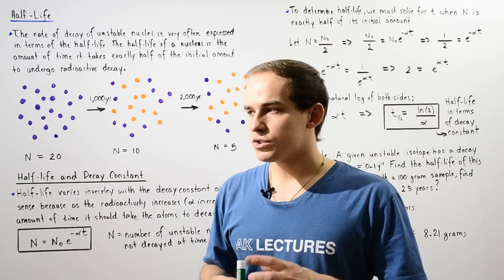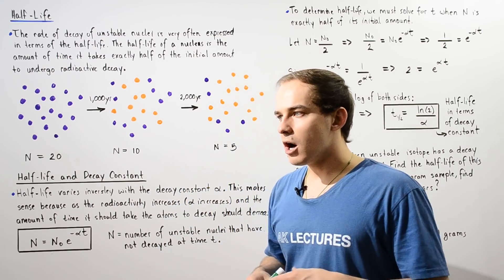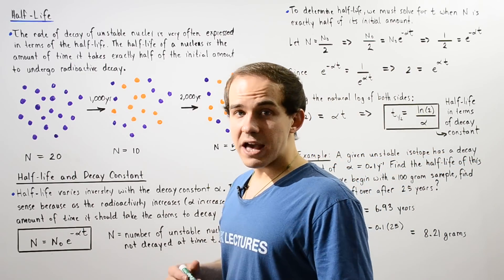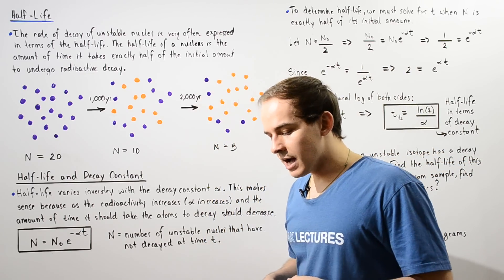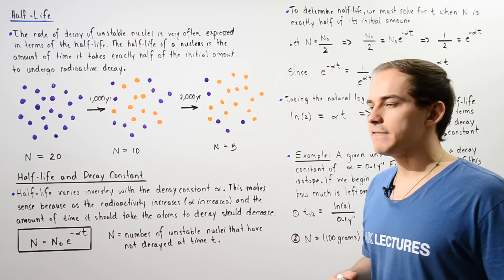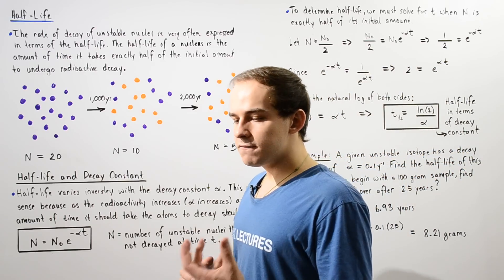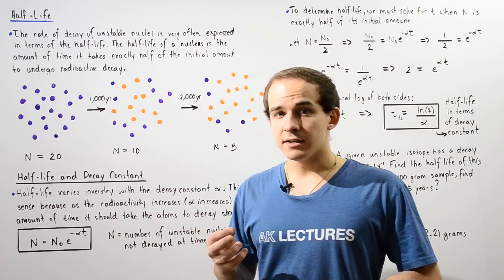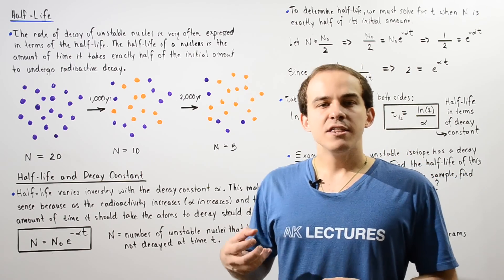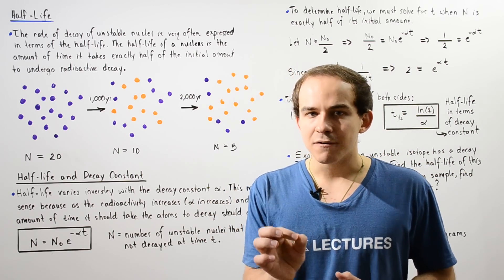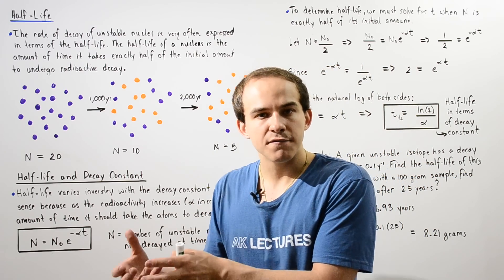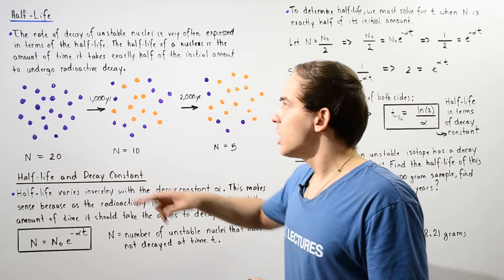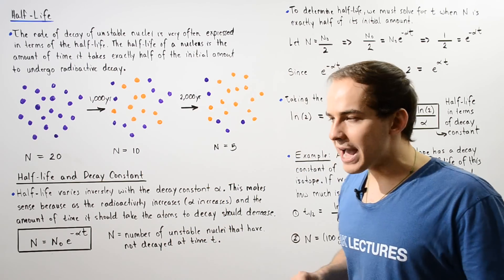One very common and useful way of representing the rate of decay of radioactive atoms is by using a concept known as the half-life. The half-life of any radioactive atom is basically the amount of time that it takes exactly half of the initial amount of that unstable atom that we begin with to undergo radioactive decay.